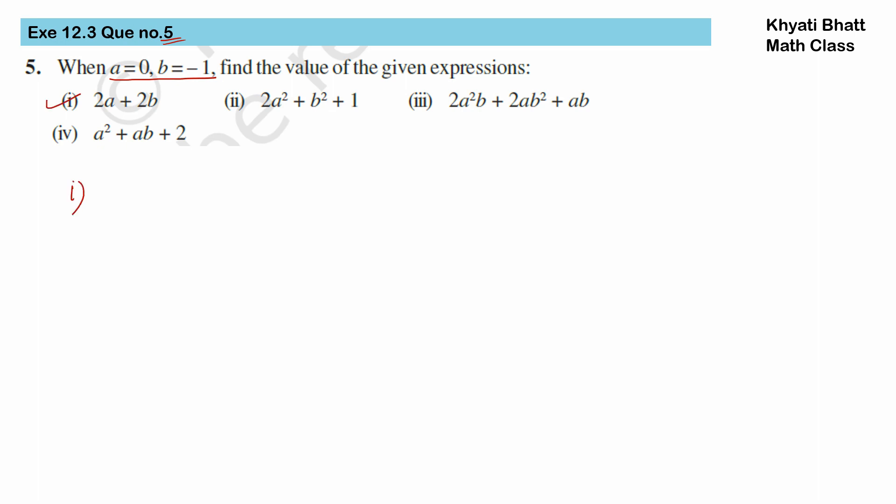Let's take the first one: 2a plus 2b. Let us insert the values. Inserting a's value, that is 0, and b's value, that is minus 1. So 2 into 0 will be 0, and 2 into minus 1 will be minus 2. So the answer is minus 2.